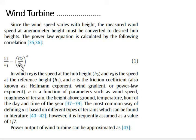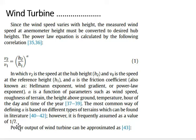Alpha is the friction coefficient, also known as the Hellman exponent, wind gradient, or power law exponent. Alpha is a function of parameters such as wind speed, roughness of terrain, height above ground, temperature, hour of the day, and time of the year. However, it is frequently assumed as a value of 1/7.